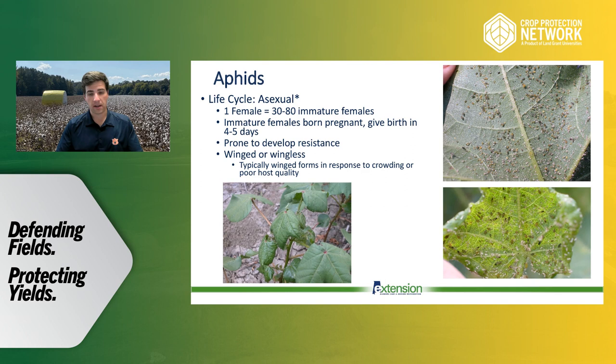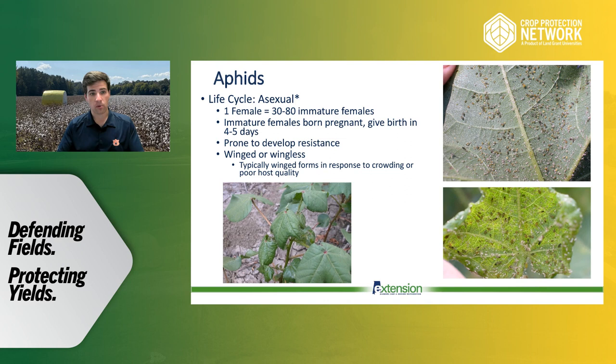Another pest along those lines are aphids. These are going to be in most fields in most years at some level — sometimes they blow up really big, sometimes they don't. Like spider mites, they reproduce really fast and they're basically already mated when they're born — they have an asexual life cycle so they can start reproducing quickly after birth. They can really build up numbers fast and are also pretty prone to developing resistance, since there's not a lot of genetic diversity when a lot of these insects can already reproduce before they're even born.